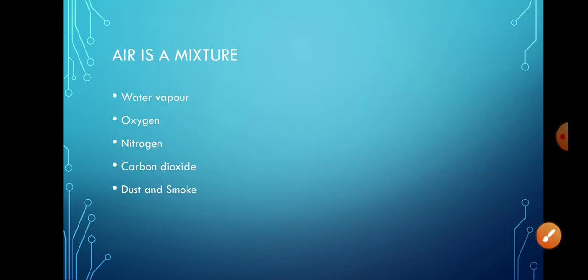Air is a mixture. People in the old times, they used to think that air is a simple thing, it is not made up of so many things. But now we know that it is a mixture of many gases. It consists of water vapor, oxygen, nitrogen, carbon dioxide, dust and smoke. We have already seen that in the process of water cycle, the water gets evaporated from the heat of the sun. And in the upper atmosphere, it is present in the form of vapor state.